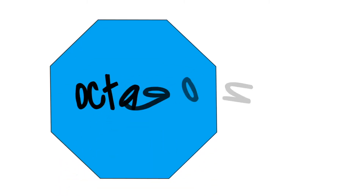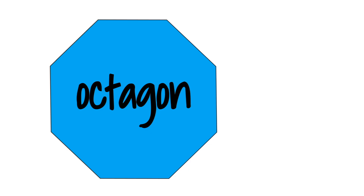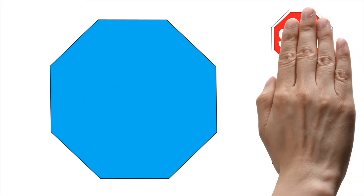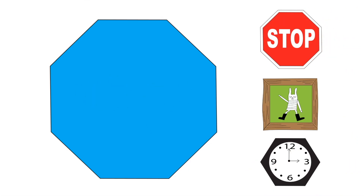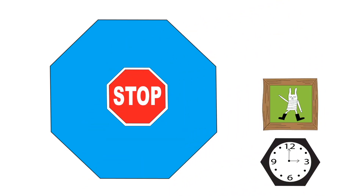This is an octagon. Can you see an object that is shaped like an octagon? A stop sign is shaped like an octagon. Octagon.